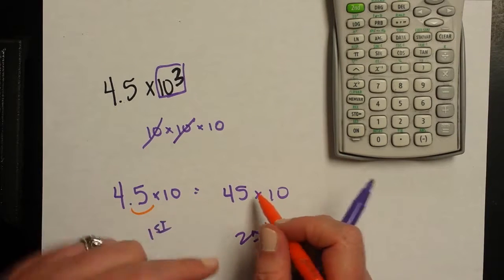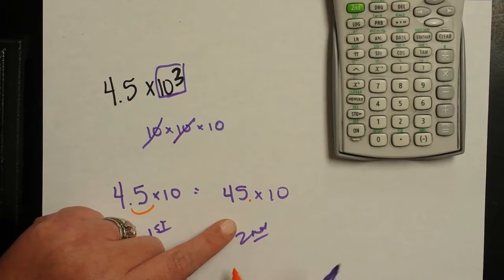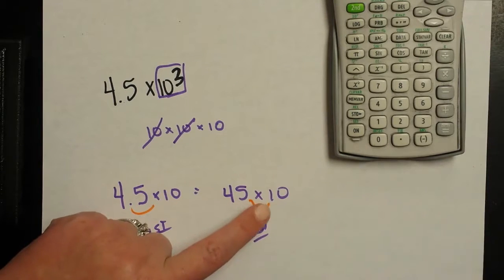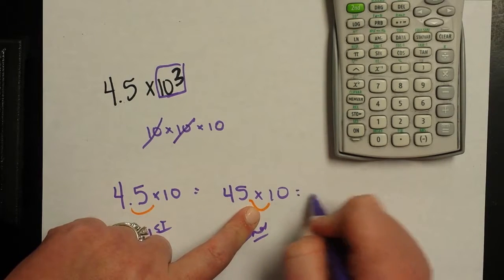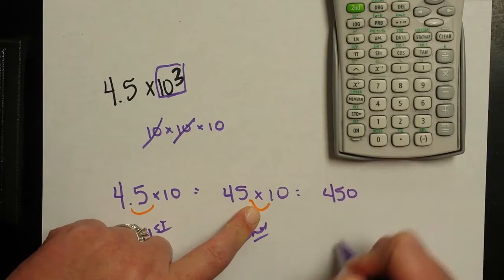Right now, even though we don't show the decimal, it technically is here behind the 5. So we're going to move it one more time. So that means now I have to use a 0 as a placeholder. I've got 450.